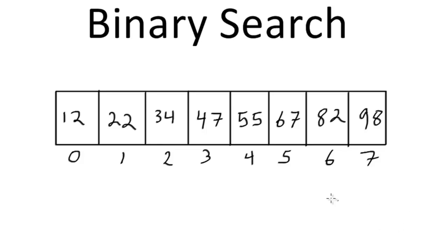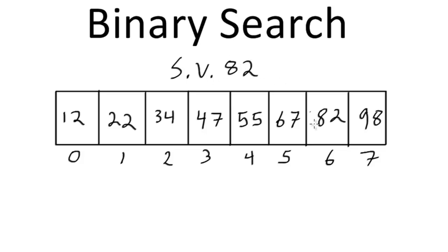Let me show you how binary search works on this small array. We have an 8-element array that meets the precondition of being sorted in ascending order. We'll say we're searching for the value 82 — that's our search value — and we can see that 82 exists in the array at the second-to-last element.